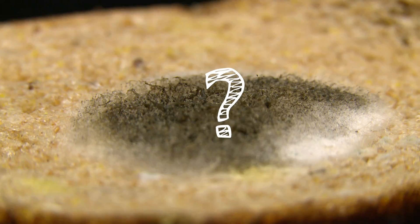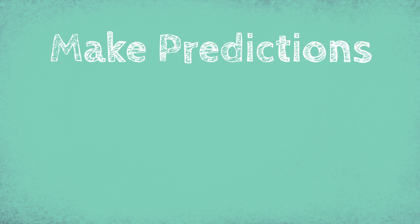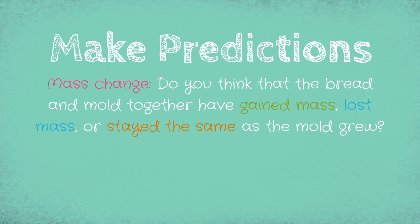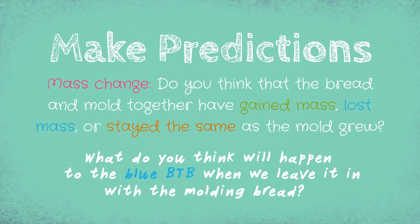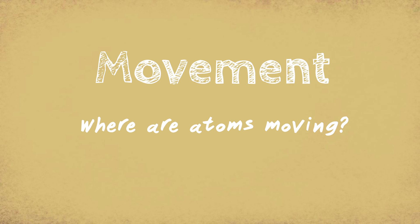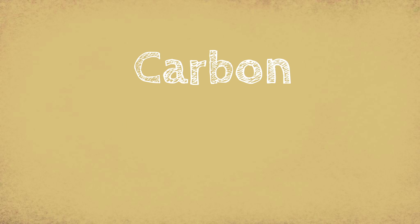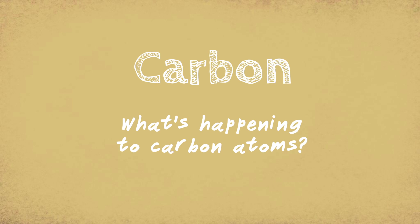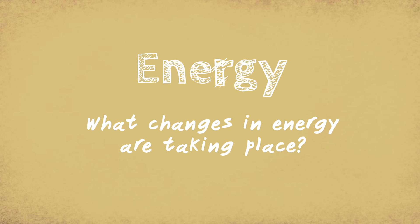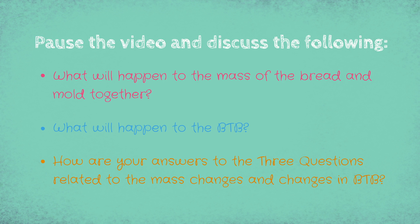Now we've got to figure out what the fungus has been doing to the bread, so let's make some predictions. Mass changes — do you think that the bread and mold together have gained mass, lost mass, or stayed the same as the mold grew? What do you think will happen to the blue BtB when we leave it in with the molding bread? To really figure out what's going on, we need to consider three questions: the movement question — where are atoms moving? The carbon question — what is happening to the carbon atoms? And the energy question — what changes in energy are taking place? Now we'll pause so you can make some predictions.